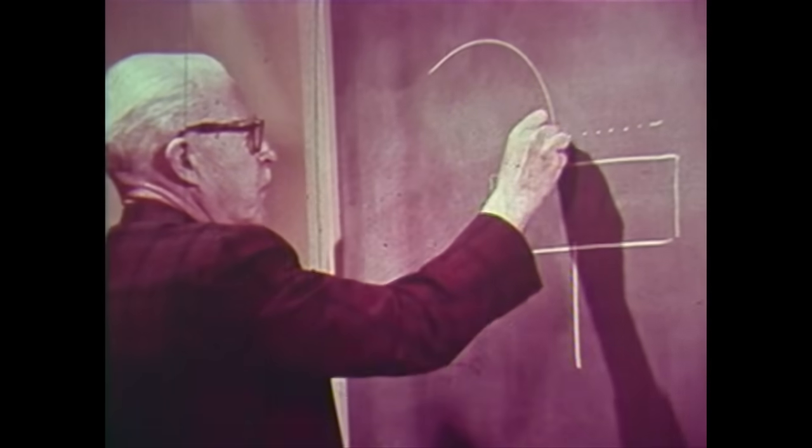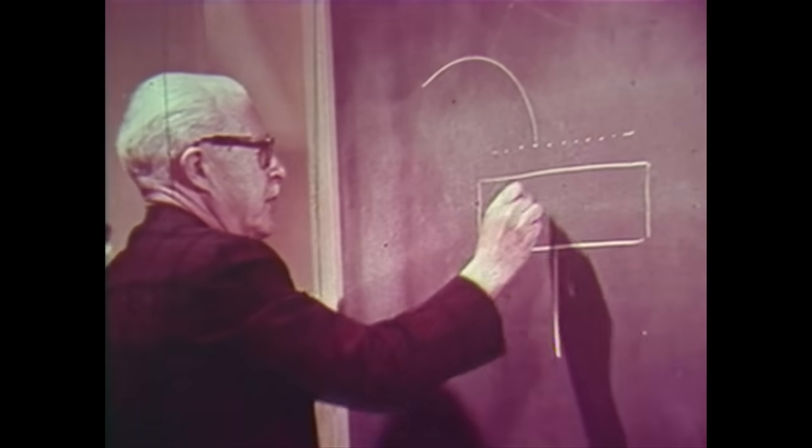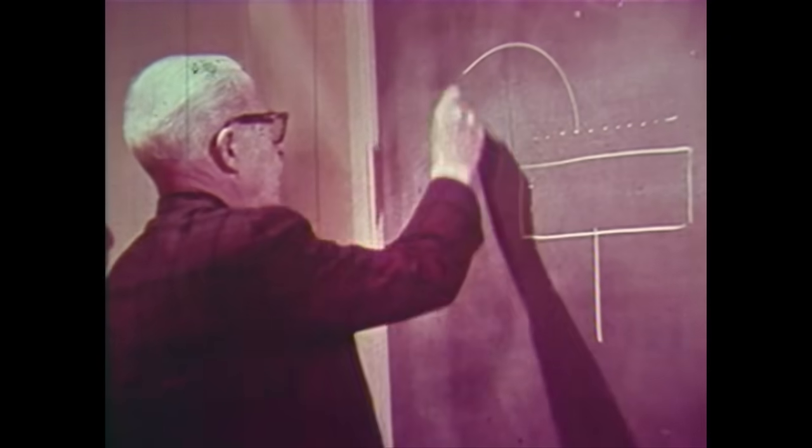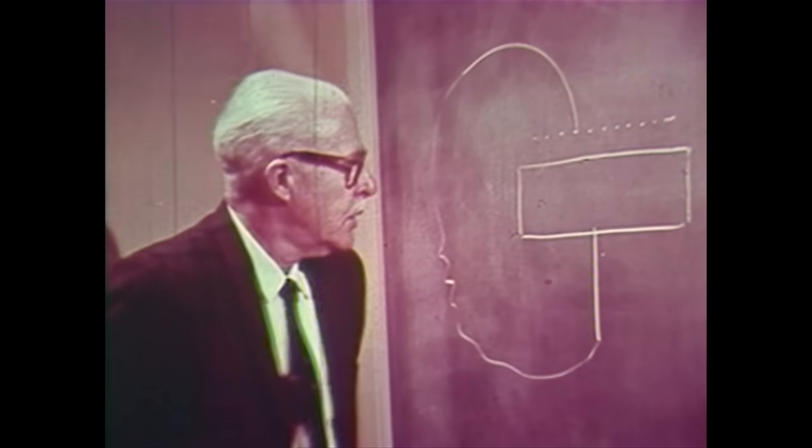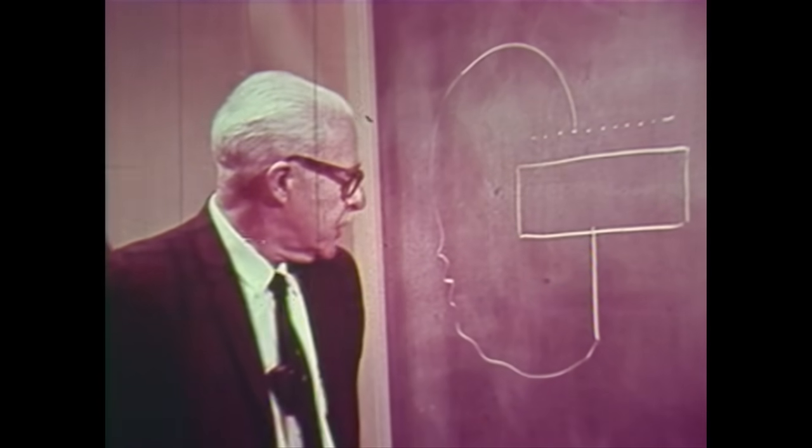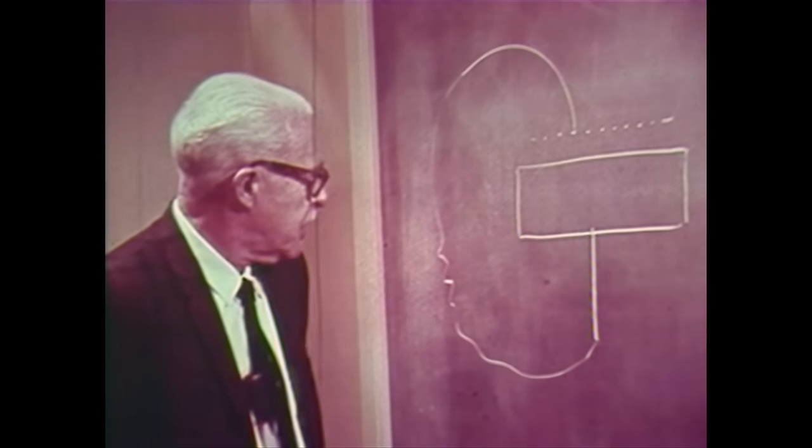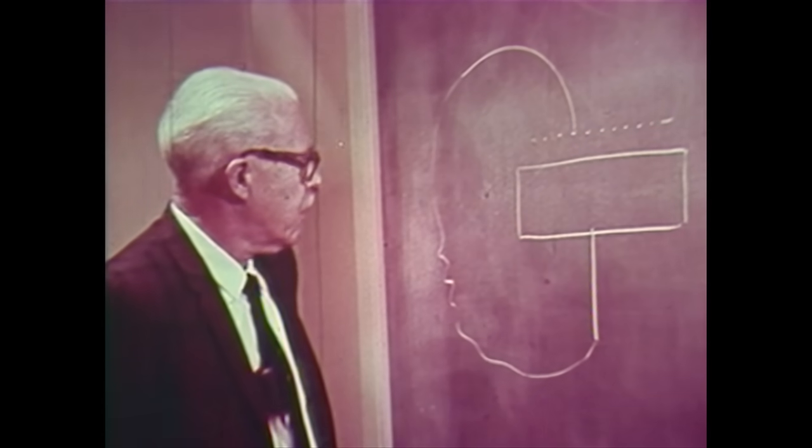If one moved the metal conductor with respect to the semiconductor, one in general got current flow in the external circuit. But one found, as Kelvin did, that if one put in a battery of the proper amount, one could move the metal with respect to the semiconductor without getting any current.